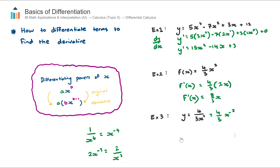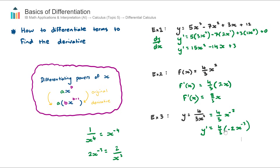Now let's differentiate what we have. Since we have y equals, the notation is y-dash. Our coefficient is 4/3, so we leave that out the front. Differentiating x^(−2): the negative two comes out the front, x, and then we subtract one from the power. Students often make the mistake of going toward zero, but we must subtract one, so −2 becomes −3. The power becomes negative three.